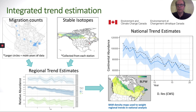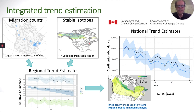As Deanna mentioned, we are working towards integrating our population estimates into official population trend estimates produced by the Canadian Wildlife Service. This slide shows exploratory work by Dave Isles at CWS to combine migration monitoring data with stable isotope maps to develop regional trend estimates. Our density models can be used to weight regional trends in the national analysis, as illustrated here for Blackpole Warbler.